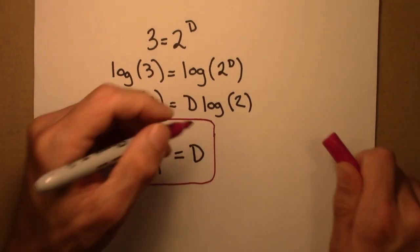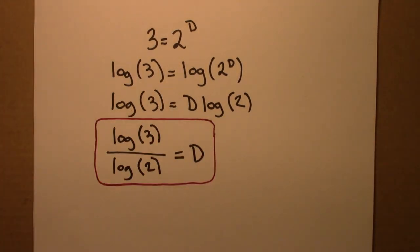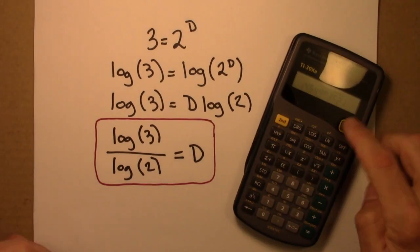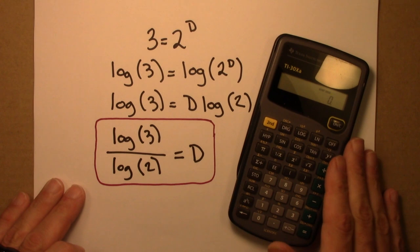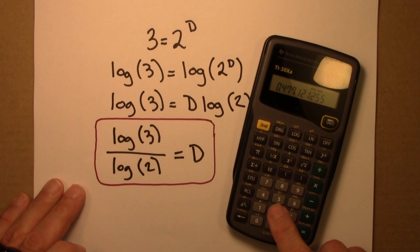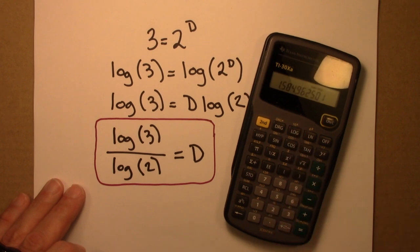The dimension of the Sierpinski triangle is log 3 over log 2. And we can get an approximate decimal value for that from a calculator. So three log divided by two log